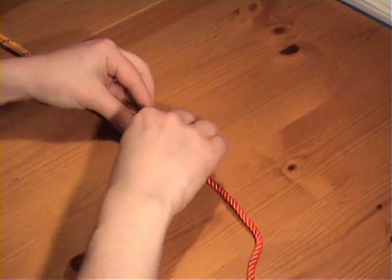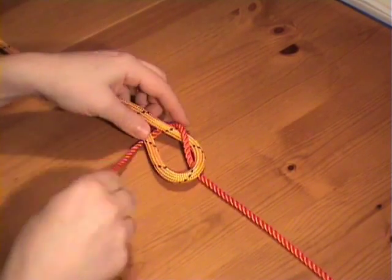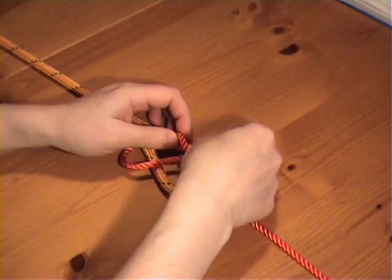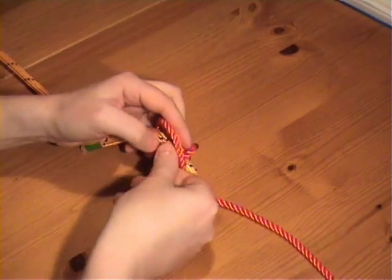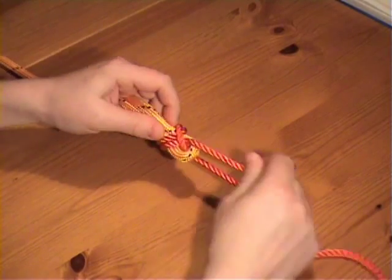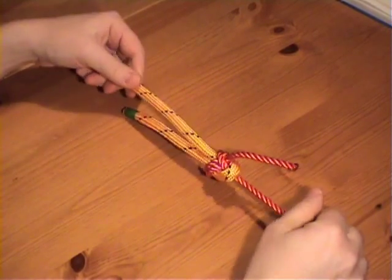Make the sheet bend as normal, up through the back, round, tuck under itself, and take it round and tuck it under again. And there's the double sheet bend.